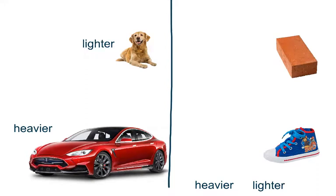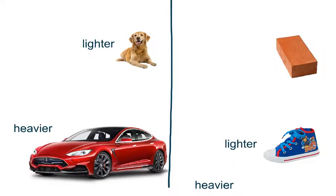Here's another example. On the right, we have two objects — a shoe and a brick. If we were to pick up a brick and pick up a shoe, which one would be lighter? Well, if I were to pick up a shoe and pick up a brick, the shoe would be much lighter than the brick. Bricks are pretty heavy. So we could say that the brick is heavier than the shoe.